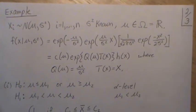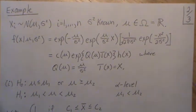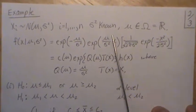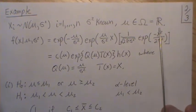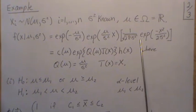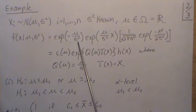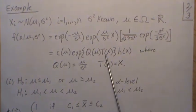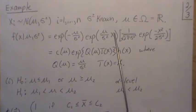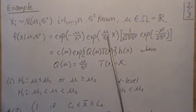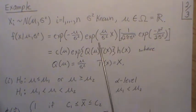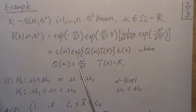Let's work through an example. Let X be normally distributed with sample size n and known variance σ². The parameter μ is in Ω, the real numbers. The normal density can be broken into exponential family form: one piece is a function of μ only (since σ² is known), one piece is a function of x only, and q is the part that is a function of μ, with T(x) = x̄. This is strictly increasing in μ, meeting the theorem's requirement.